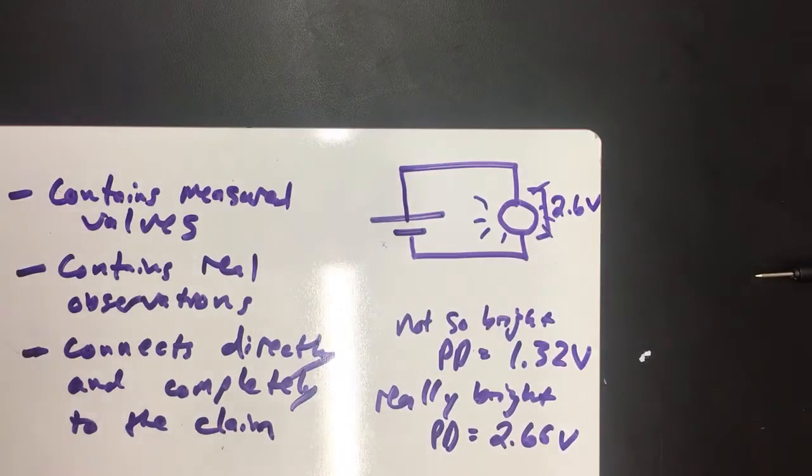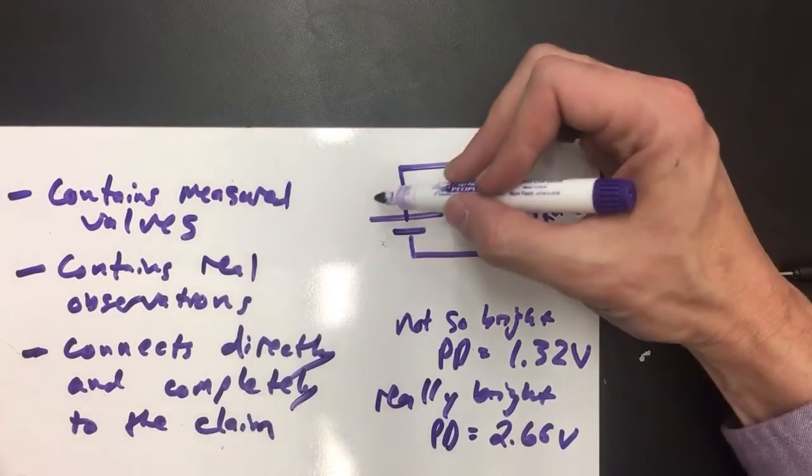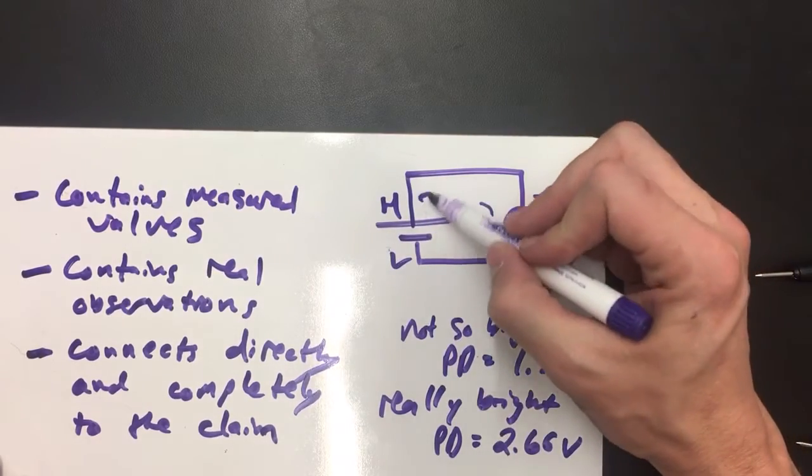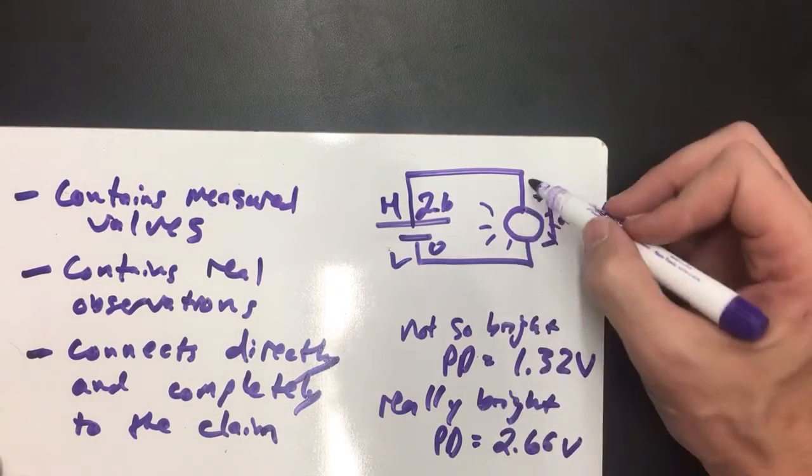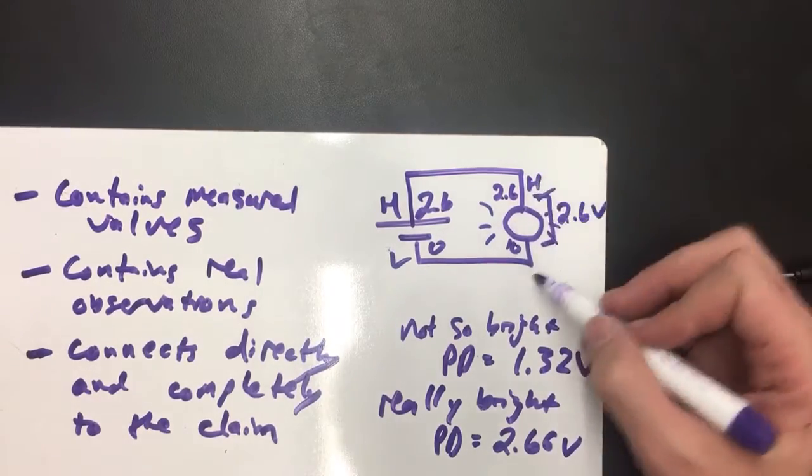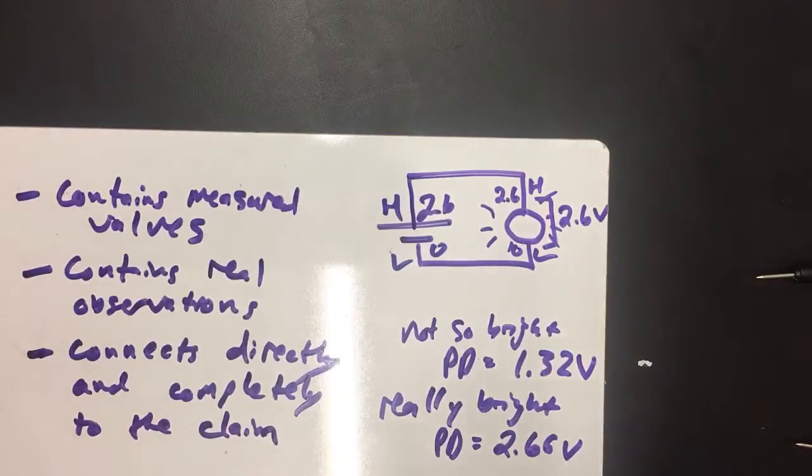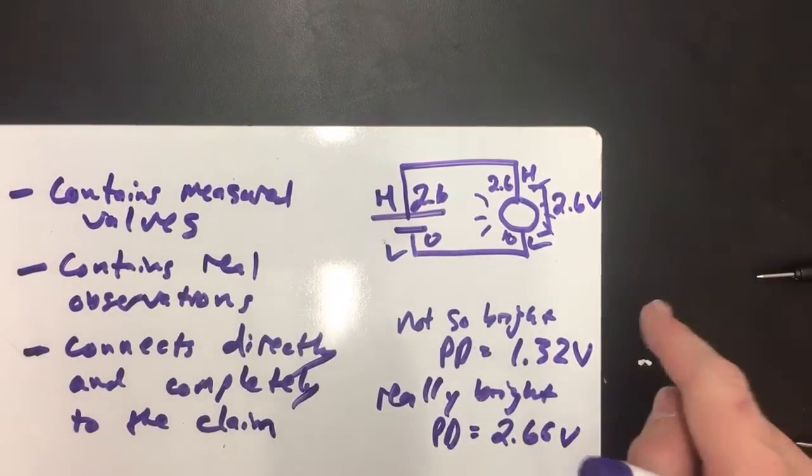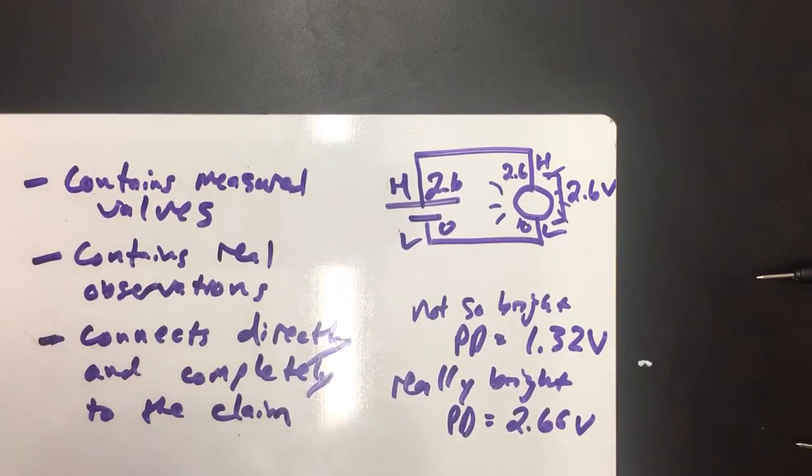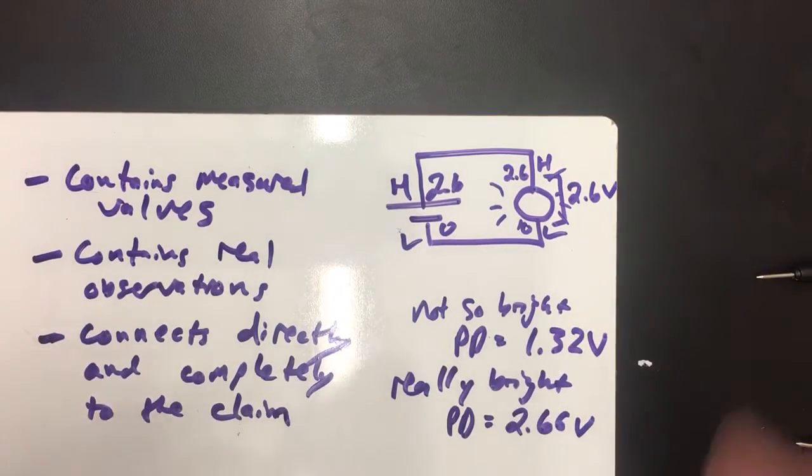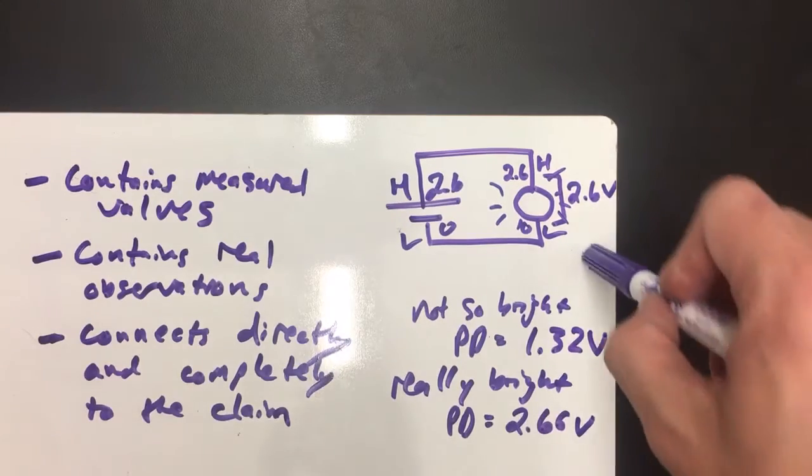Use some of the things that we've done to annotate this bulb. I could even do this, high and low, or 2.6 and 0, 2.6 and 0, high, low. All of this is an example of an annotated diagram that is relevant to this specific claim, and if you want to get a high CogSkill score on selecting evidence for this, you need to actually show that you understand how to demonstrate that evidence through an annotated circuit diagram.